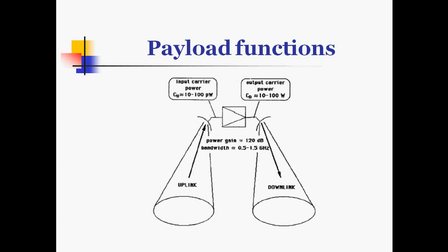Payloads or transponders function by receiving signals from the uplink — input carrier power in the range of 10 to 100 W — and after processing, sending output carrier power of 10 to 100 W on the downlink. This provides a power gain of 120 dB and utilizes bandwidth from 500 MHz to 1500 MHz, which is the band of frequencies used by transponders or payloads.